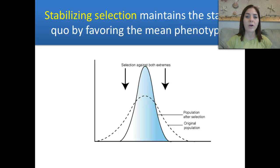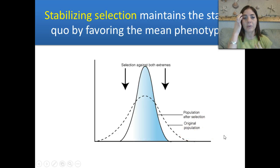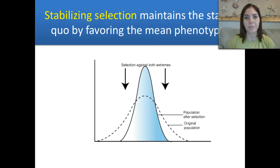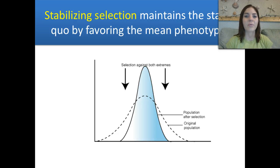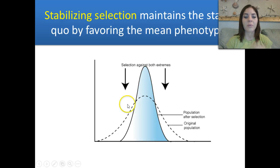Stabilizing selection maintains the status quo by favoring the mean phenotype — you see less and less of the extremes on each edge and mostly individuals that share that median. An example is birth weight. Babies with very high birth weights are detrimental — sometimes the mom doesn't survive, or the baby gets stuck in the birth canal; you don't see many babies that are 13 or 14 pounds. Similarly, a very low birth weight indicates a sickly or premature baby. Because of advances in medicine — neonatal care and cesarean sections — many of these extreme cases can now be managed.